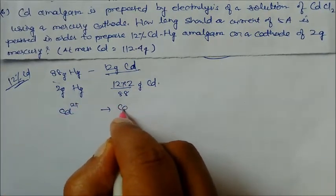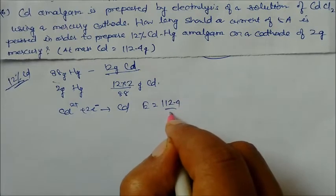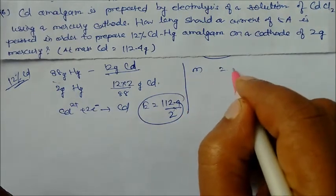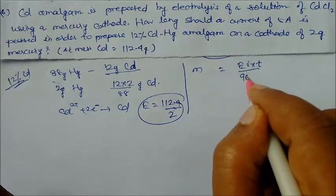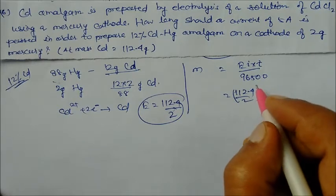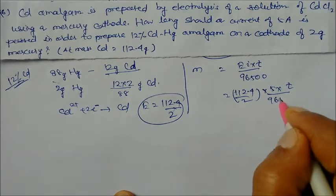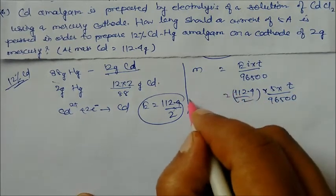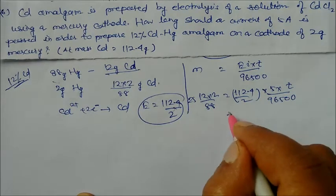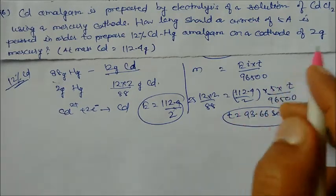Cd²⁺ converts to Cd requiring 2 electrons, so equivalent mass of cadmium = 112.4 / 2. Applying the formula: m = (E × i × t) / 96500, where E = 112.4/2, i = 5 ampere, and m = 12 × 2 / 88. Solving for t gives t = 93.66 seconds. This is the time required.